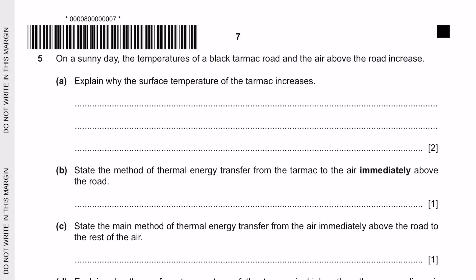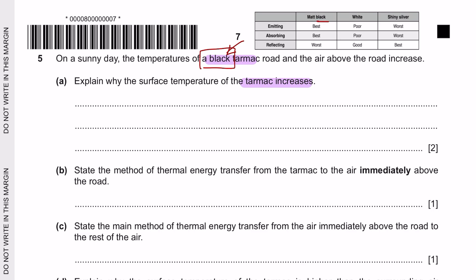Next question 5. On a sunny day, the temperatures of black tarmac road and the air above the road increases. Question A: Explain why the surface temperature of the tarmac increases. Now when you are given with specific color, they want you to know the property of this. So you should know how the color and the surface can absorb, emit or reflect heat. Now black color means it's the best at absorbing and emitting heat, and it's the worse at reflecting heat. So that means on the surface, all it does is absorbs heat and emits them.